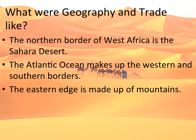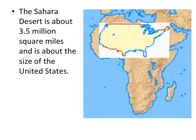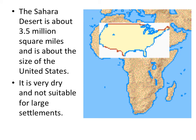So those are the three borders of West Africa. Here is a graphic showing that the lower 48 states of the United States could fit into the Sahara Desert — that is how big it is. It's the largest desert on the face of the earth, about 3.5 million square miles, roughly the size of the contiguous 48 states. The Sahara Desert is extremely dry and not suitable for large settlements because there's hardly any food or water. If you are a human being, the Sahara Desert is pretty much not the place for you.